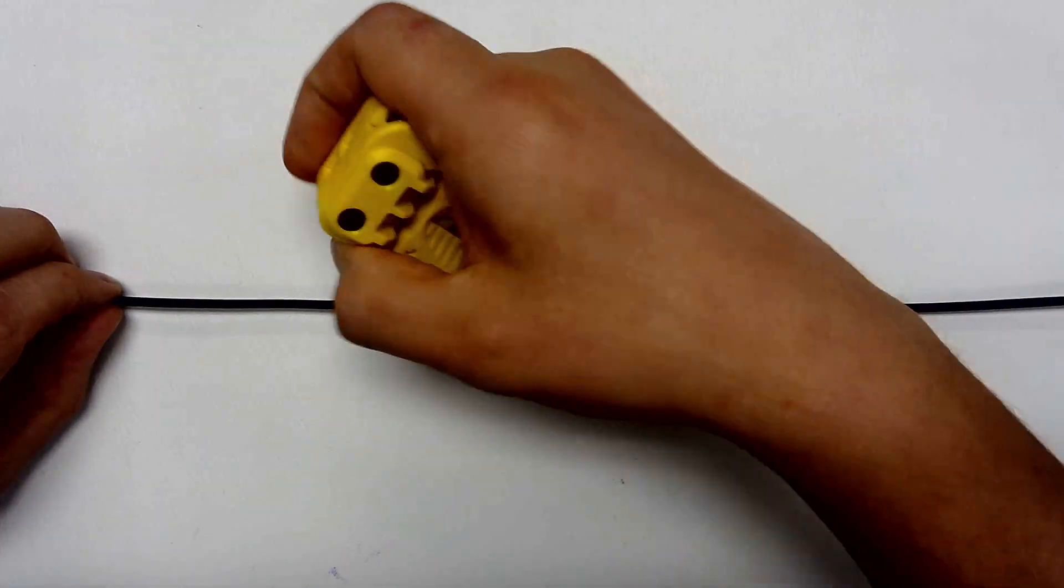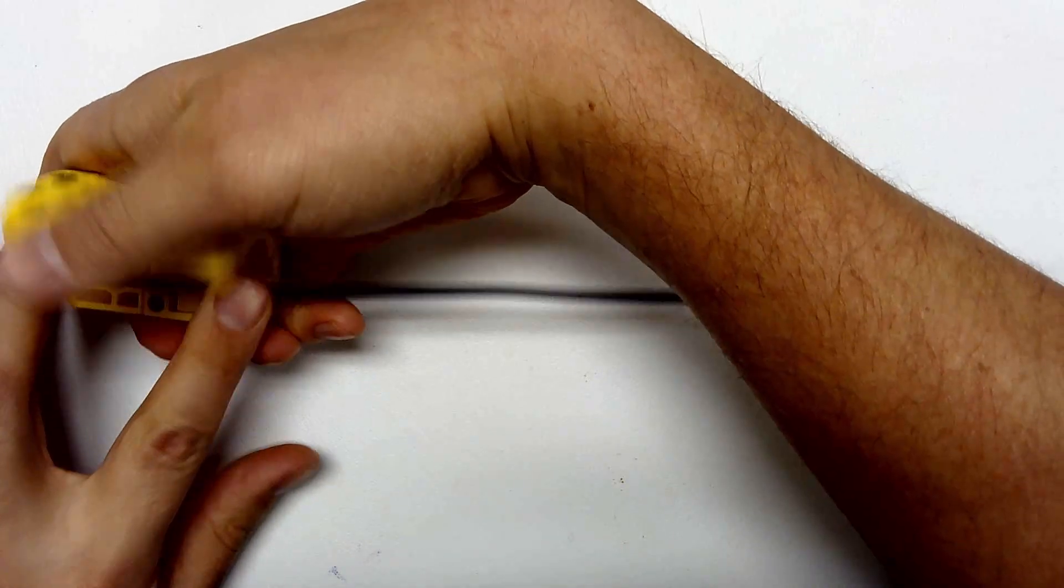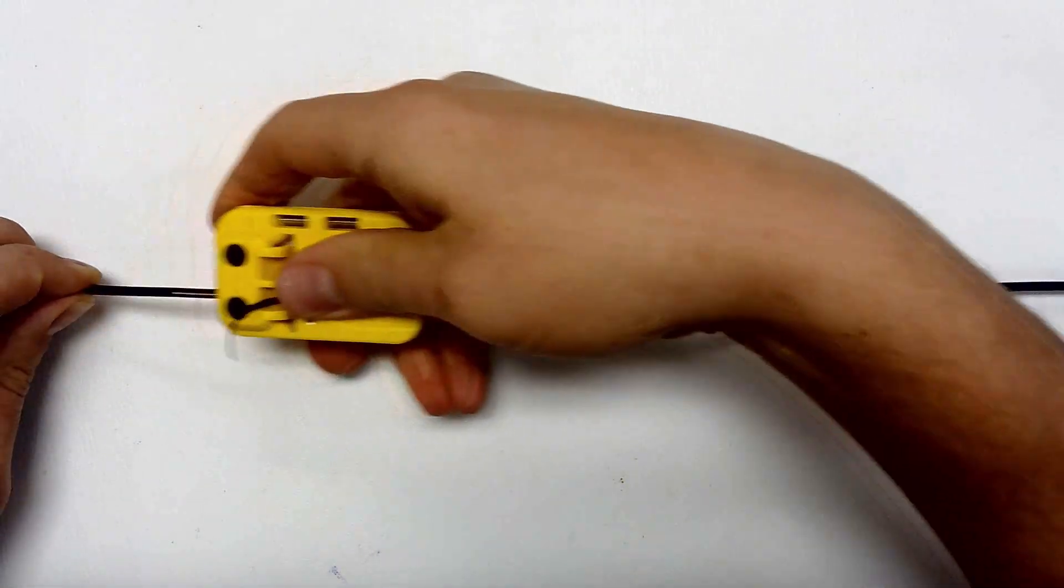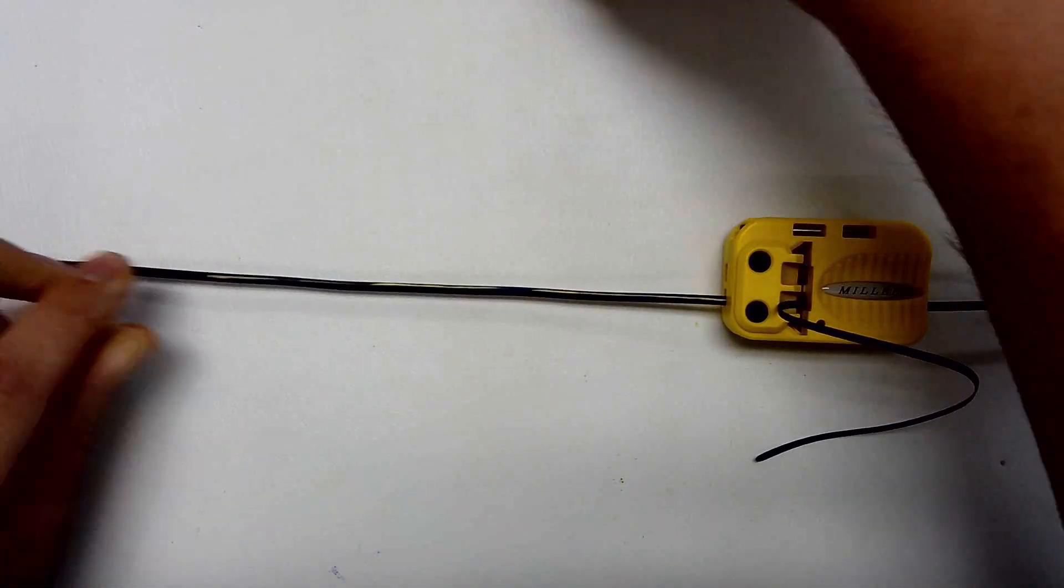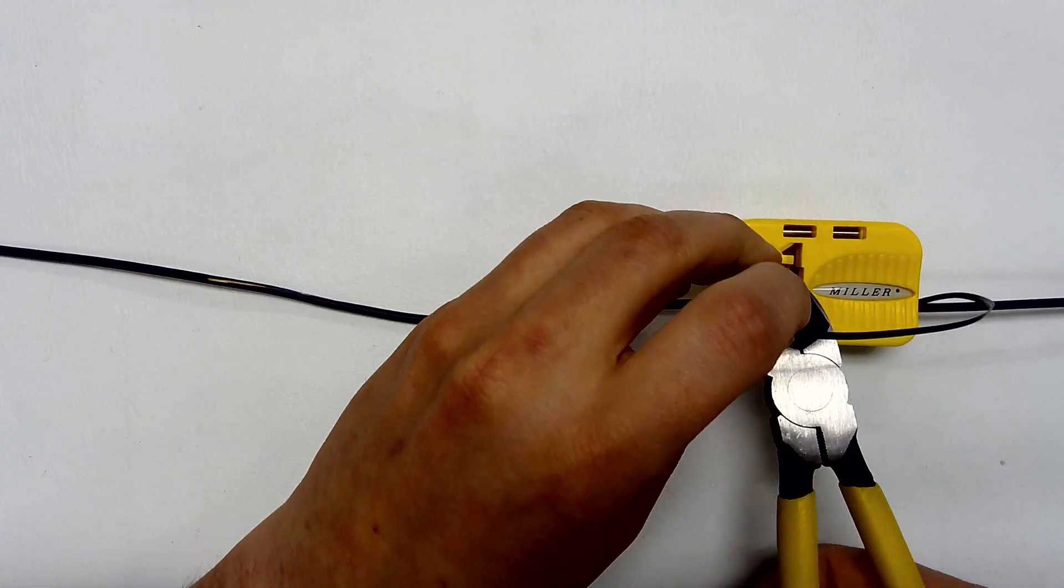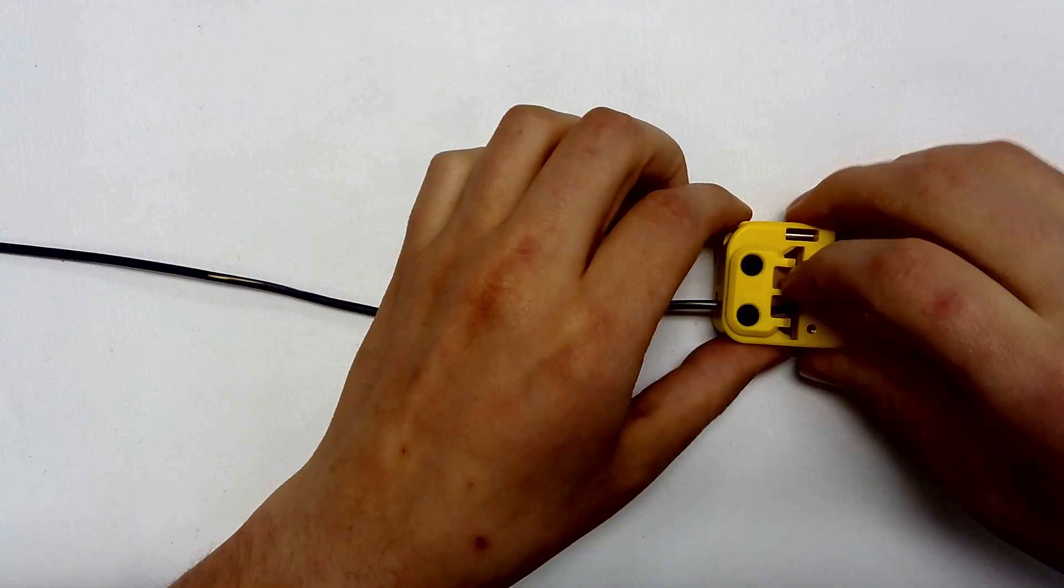Coming to you from Ripley Labs, today we'll introduce the Miller MSAT-X dual channel fiber access tool. The MSAT-X is an easy to use access tool for MDU and fiber to the home jacketed premise drop cables, as well as many loose buffer tube cables.